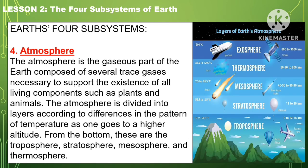The last subsystem of the Earth is the atmosphere. The atmosphere is the gaseous part of the Earth composed of several trace gases necessary to support the existence of all living components such as plants and animals. The atmosphere is divided into layers according to differences in the patterns of temperature as one goes to higher altitude. From the bottom, these are the troposphere, stratosphere, mesosphere, and thermosphere.